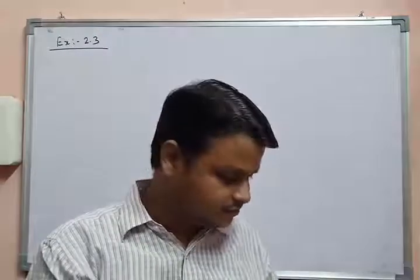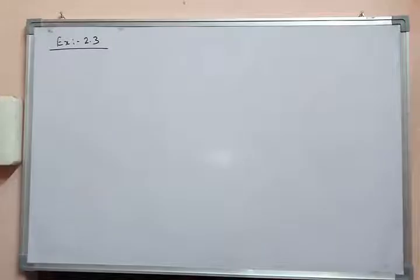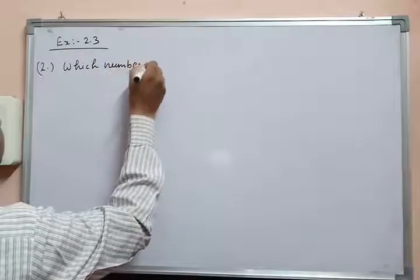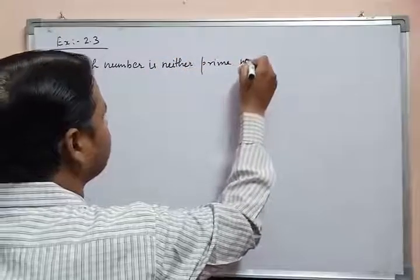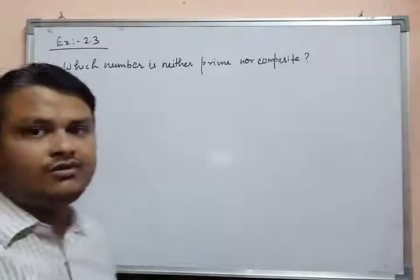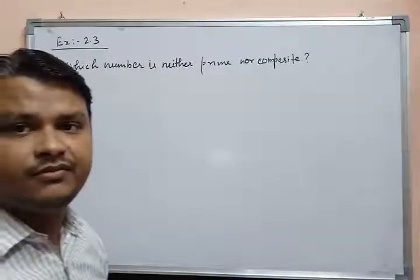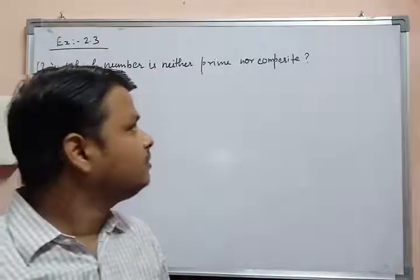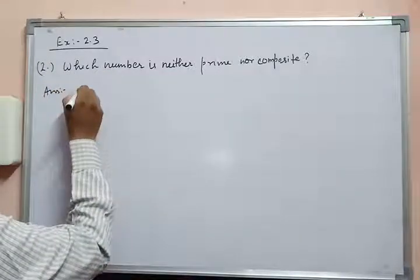Now moving to the next question: which number is neither prime nor composite? Students, I know you all know the answer — only one is the number which is neither prime nor composite. One is the only number about which you can't say it is prime and it is not composite either. So the answer to this question is one.